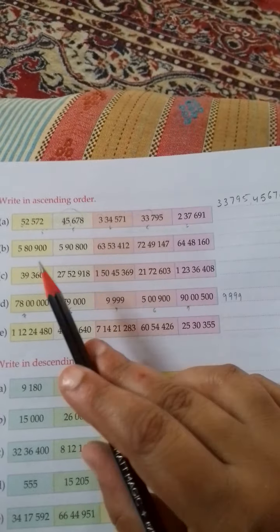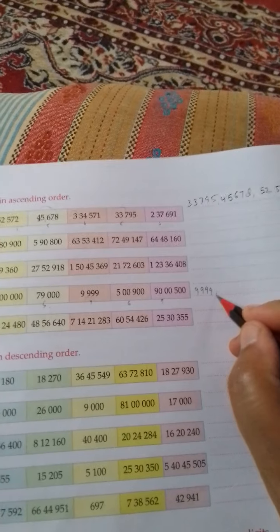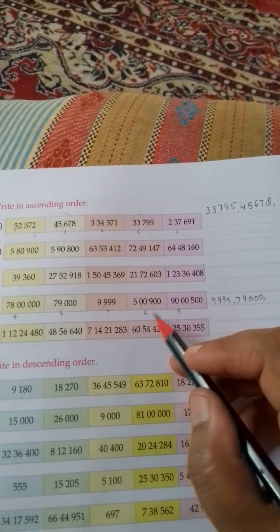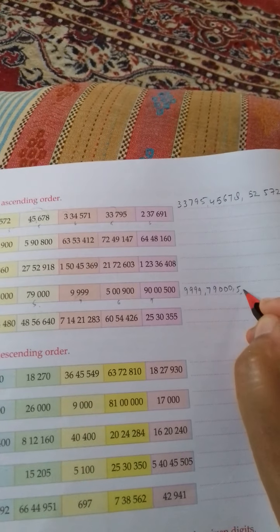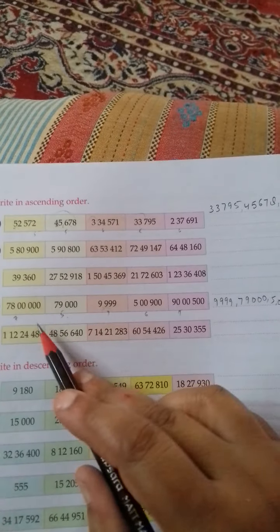In ascending order we have to write smallest to largest. Then after that 5 digit number: 7, 9, 0, 0, 0. Then 6 digit number: 5, 0, 0, 9, 0. Then 7 digit numbers are there.